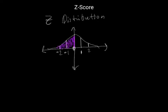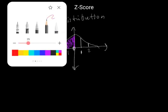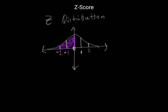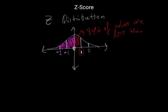And if our value lied at one z-score, this would mean 84% of values are less than one standard deviation.